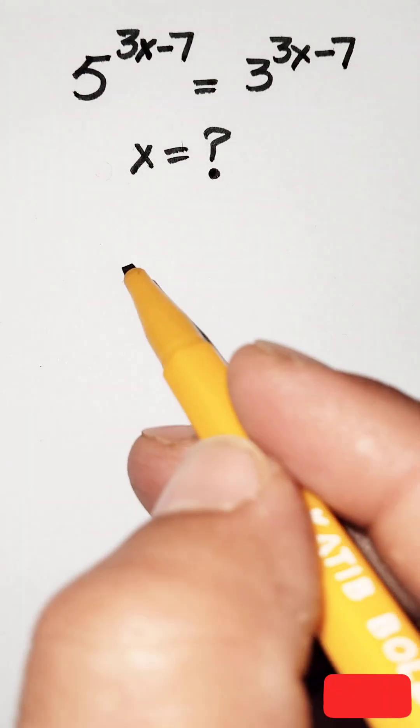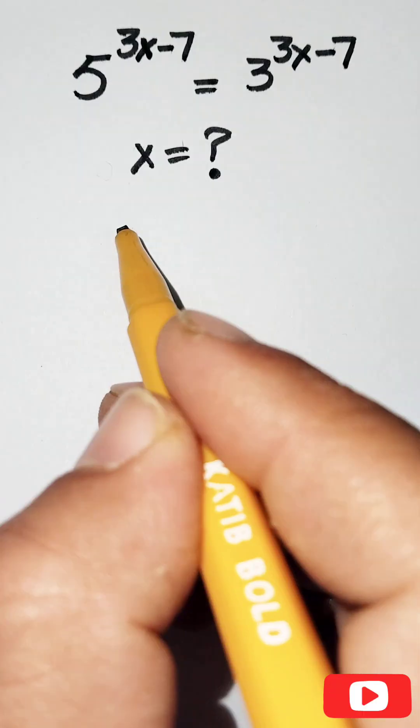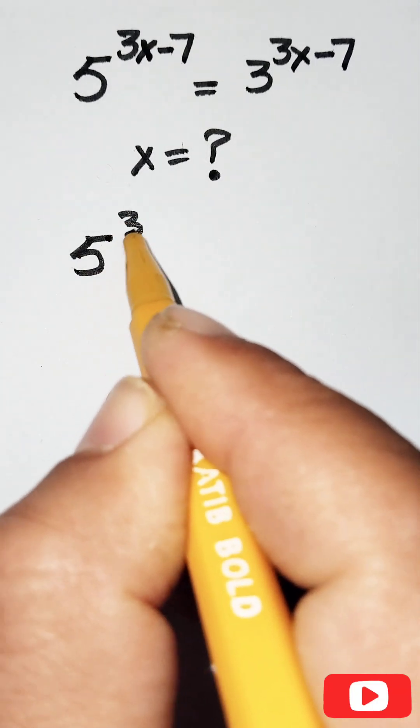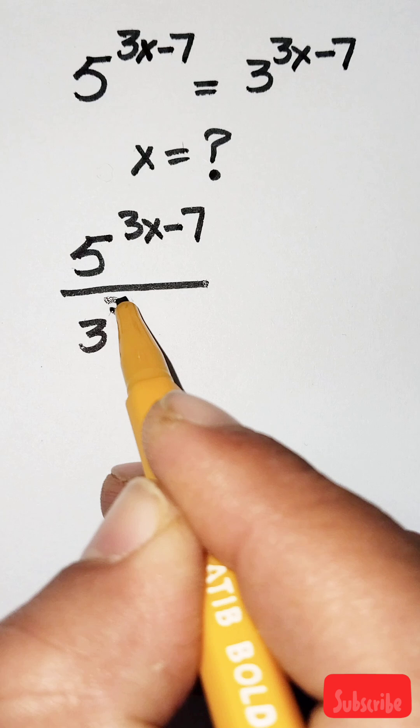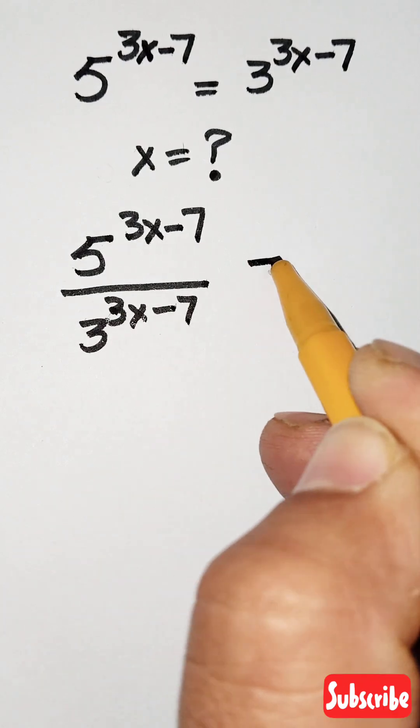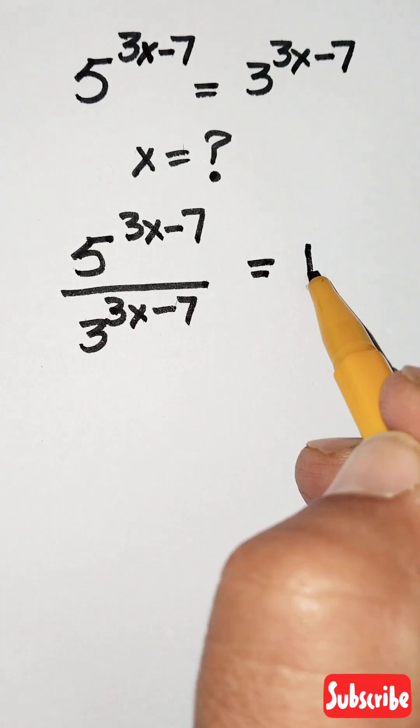So we write 5 to the power 3x minus 7 over 3 to the power 3x minus 7, which equals 1 when we divide both sides.